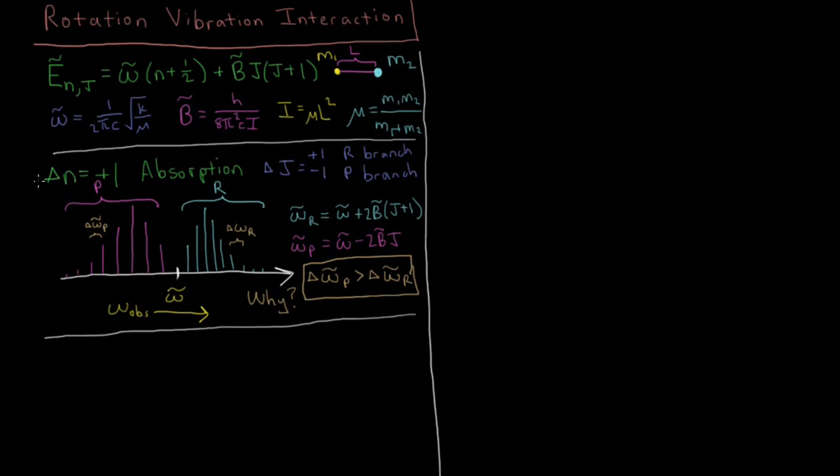And we have this selection rule that the change in the vibrational quantum number Δn equals plus one for absorption of a photon, and for the change in the rotational quantum number during that transition we have that is plus or minus one, giving us the R branch for plus one and P branch for minus one.